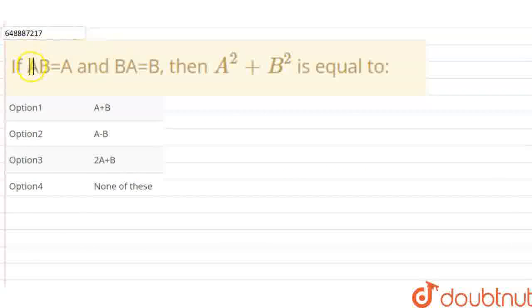Hello friends! What do you mean by this question? If AB is equal to A and BA is equal to B, then A squared plus B squared goes to what? You need to know A squared plus B squared. There are 4 options given.